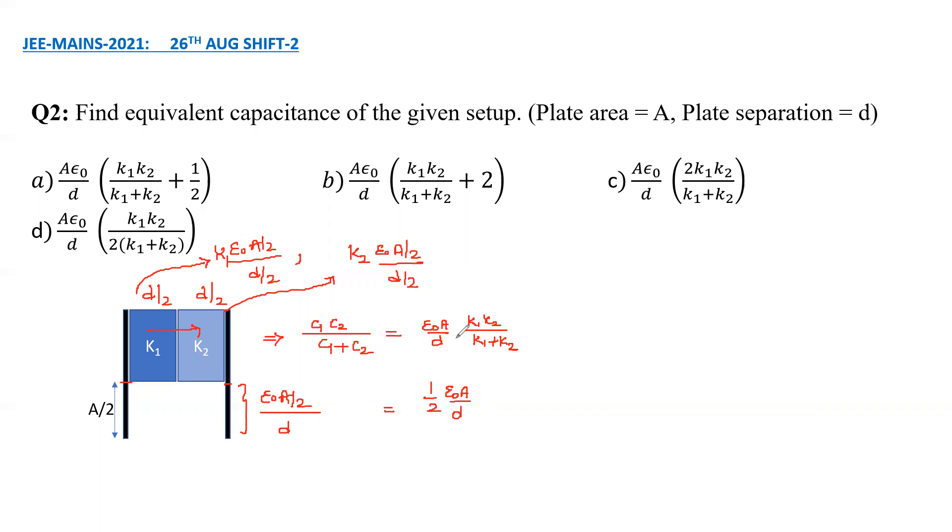And this one is half times epsilon naught A by d. And therefore the upper combination and the lower capacitance, these two are in parallel combination. And the effective capacitance comes out to be epsilon naught A by d times k1 k2 by k1 plus k2 plus half. So the correct option is option A. I hope you are clear with this.